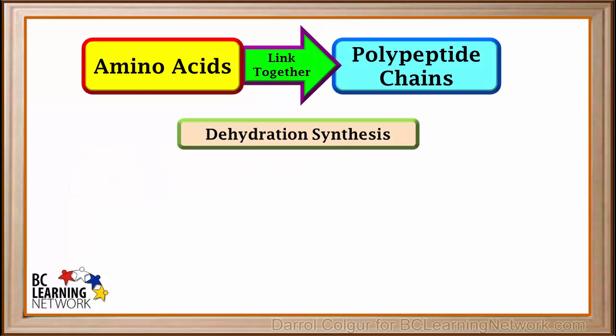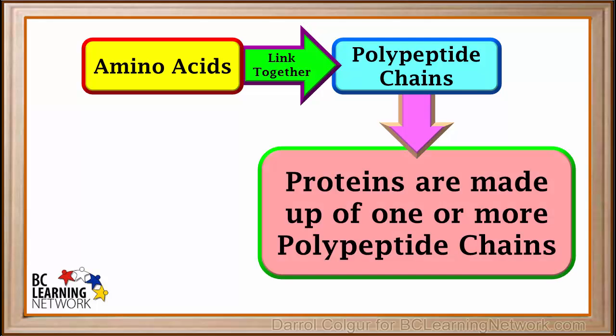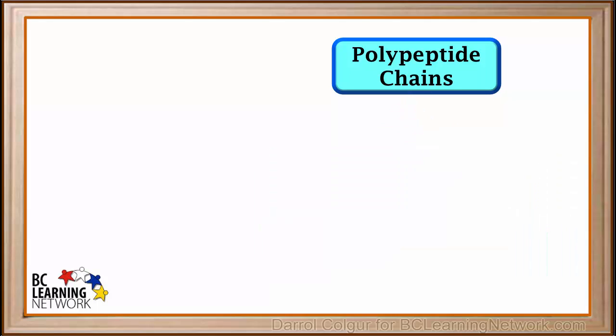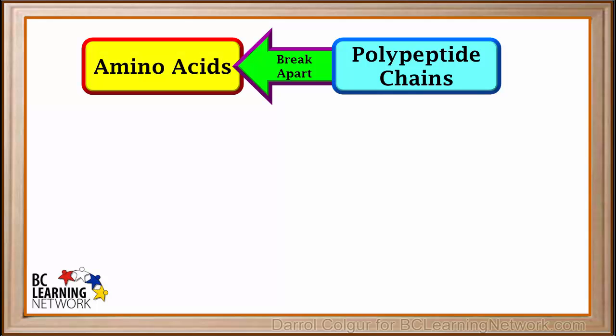To review, we've seen how amino acids link together to form polypeptide chains using the process of dehydration synthesis, and that proteins are very large molecules made up of one or more polypeptide chains. Proteins in the foods we consume are made up of polypeptide chains. Polypeptide chains in these proteins break apart into smaller peptide molecules and eventually into amino acids using the process of hydrolysis.